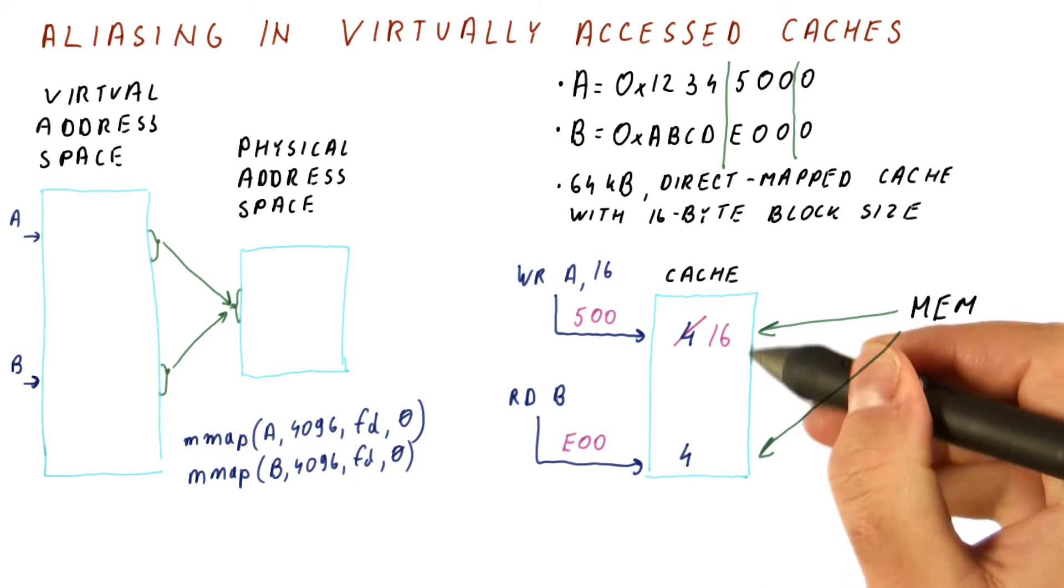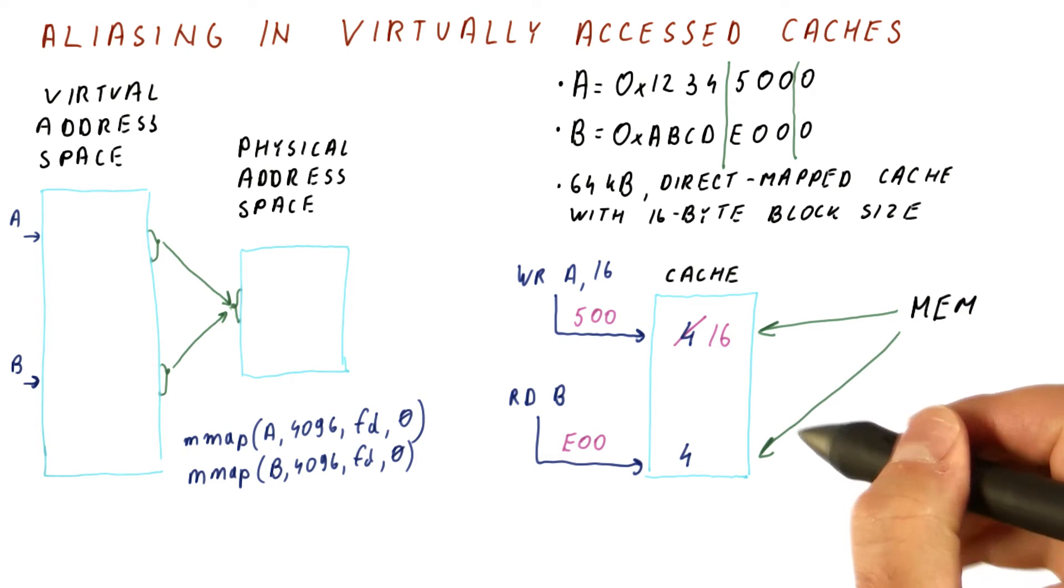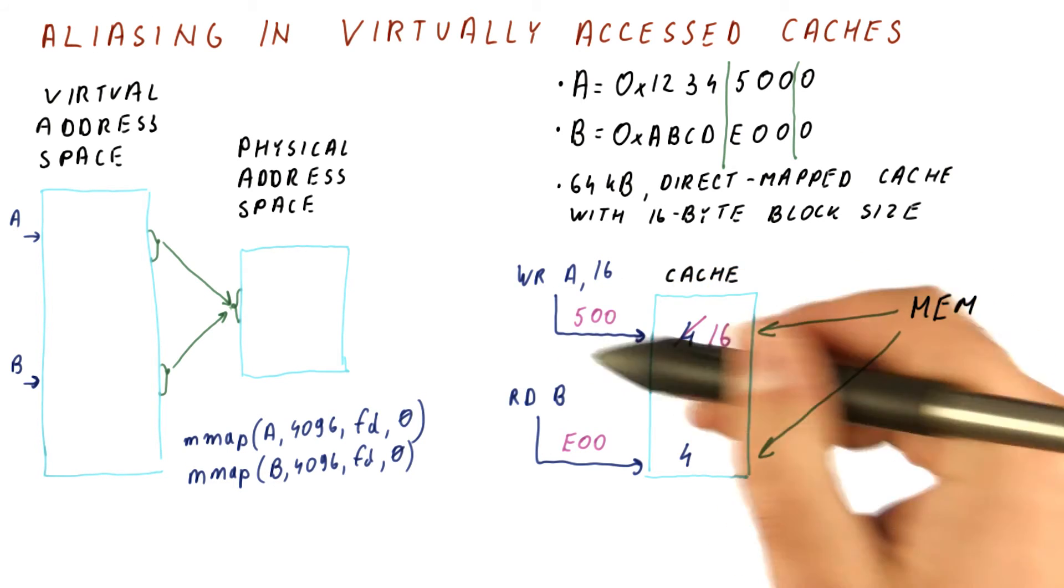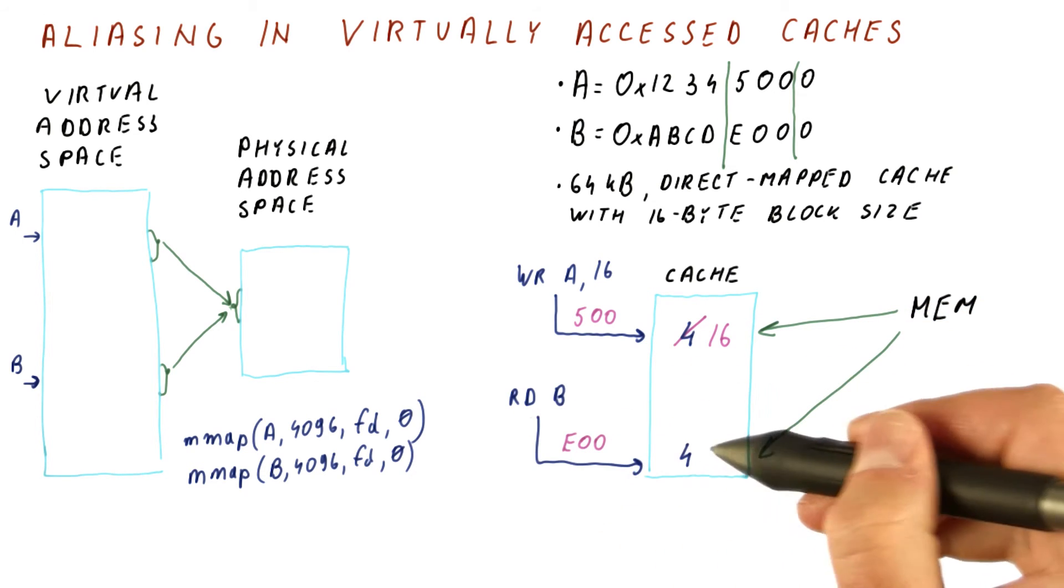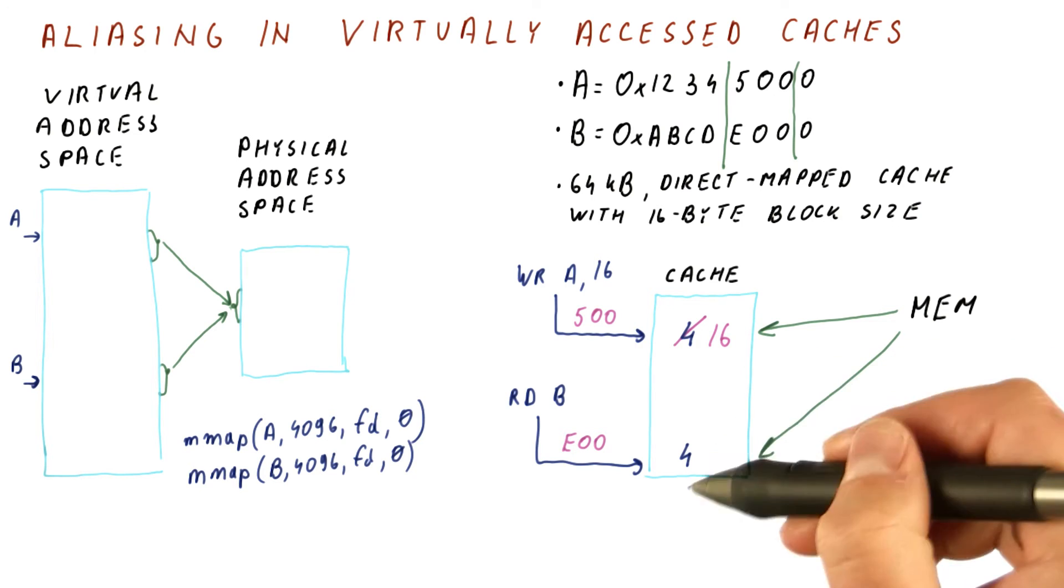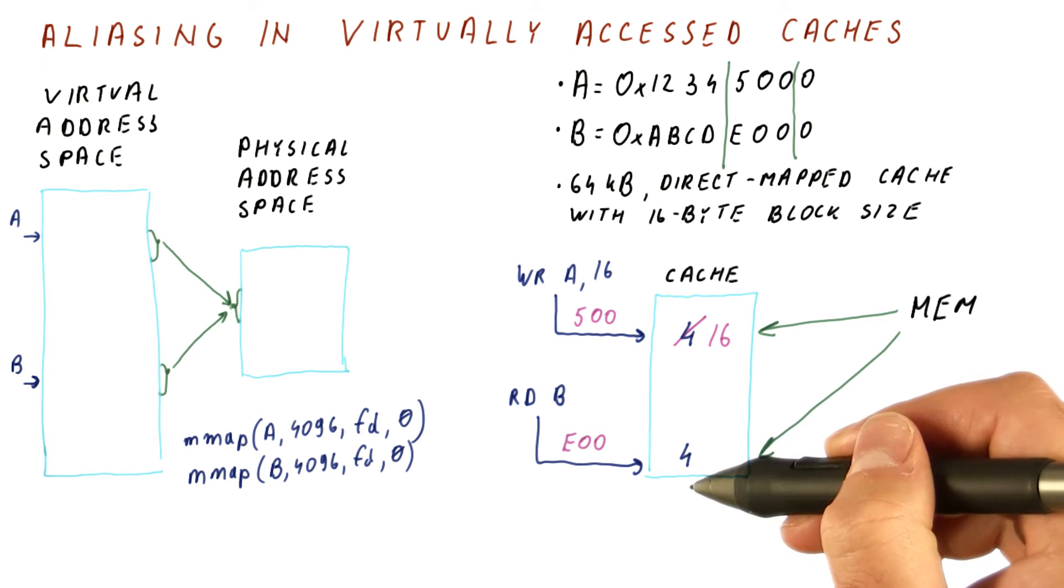Note that this problem is not just a problem on the cache misses. From now on, whenever we write to A, we will be changing this cache block. And whenever we read from B, we will be reading this cache block. So they never really end up sharing the data as they should.